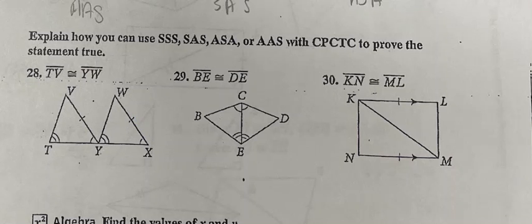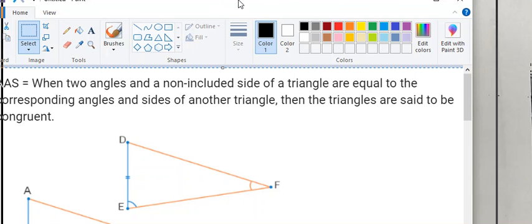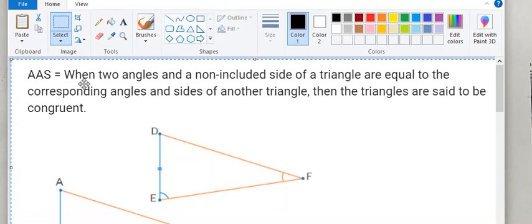So when this occurs, it's going to be something like this: AAS. When two angles and a non-included side of a triangle are equal to the corresponding angles and sides of another triangle, then the triangles are said to be congruent. So here we see a similar diagram where we have two angles but the side is not shared with the two angles, so this would be an AAS.